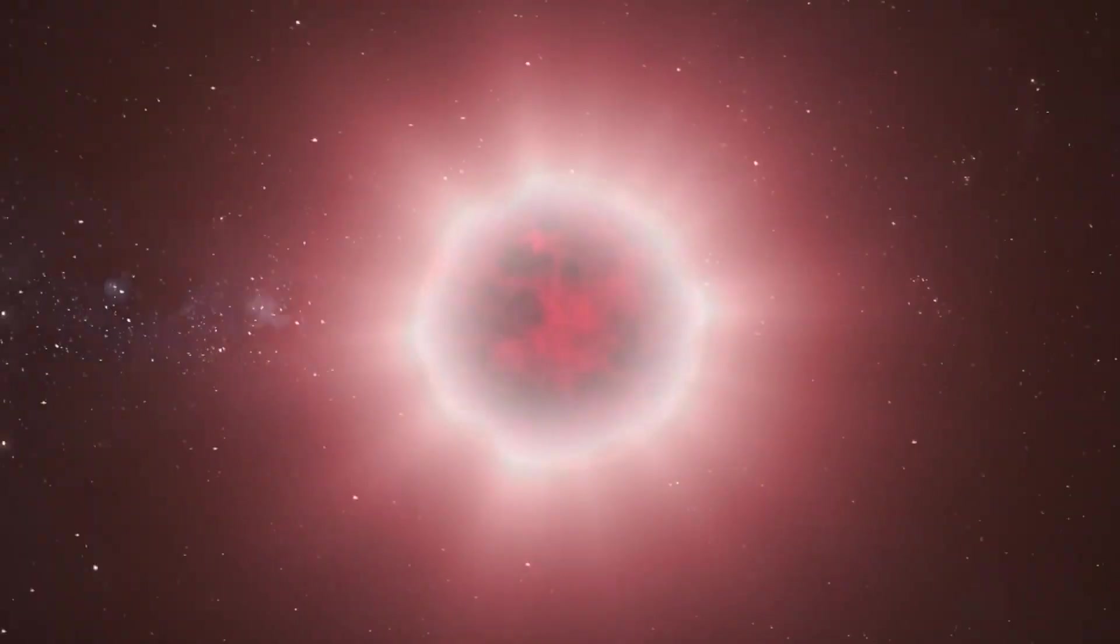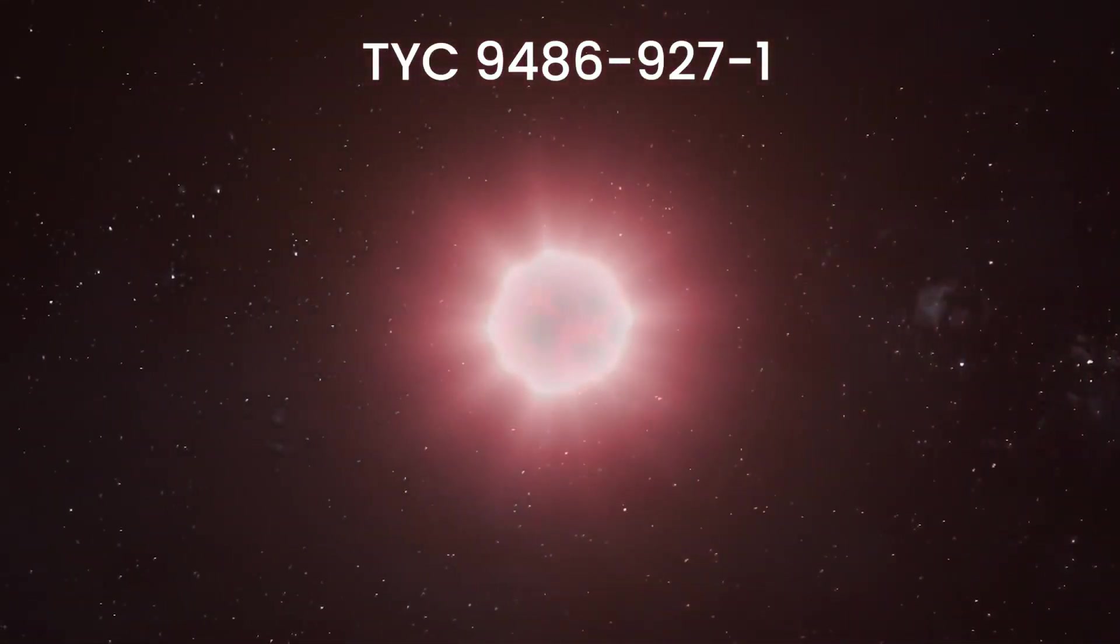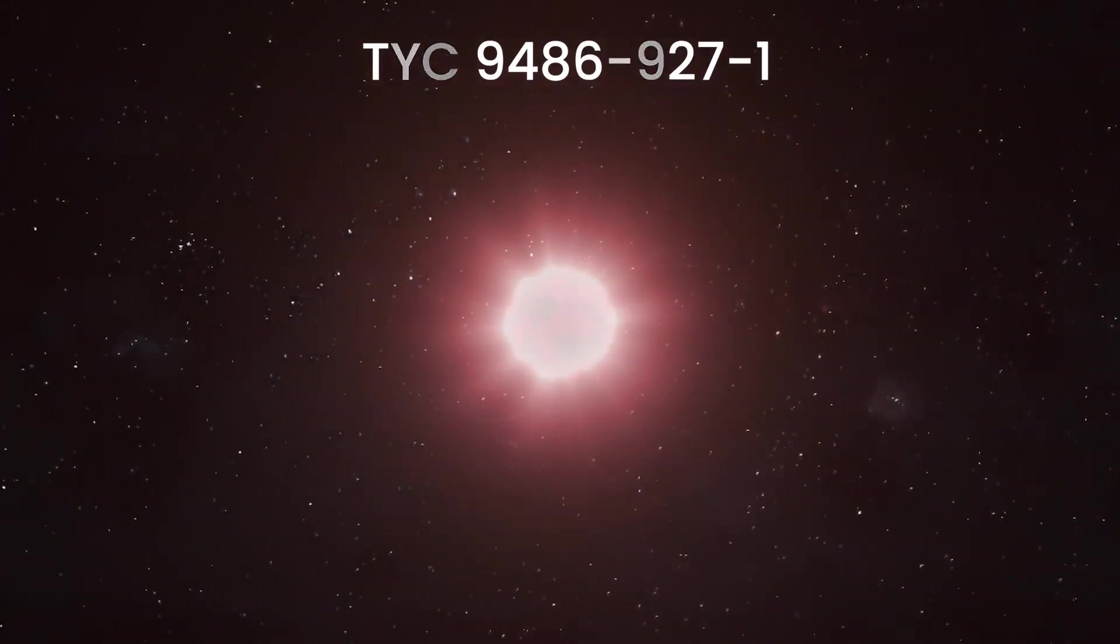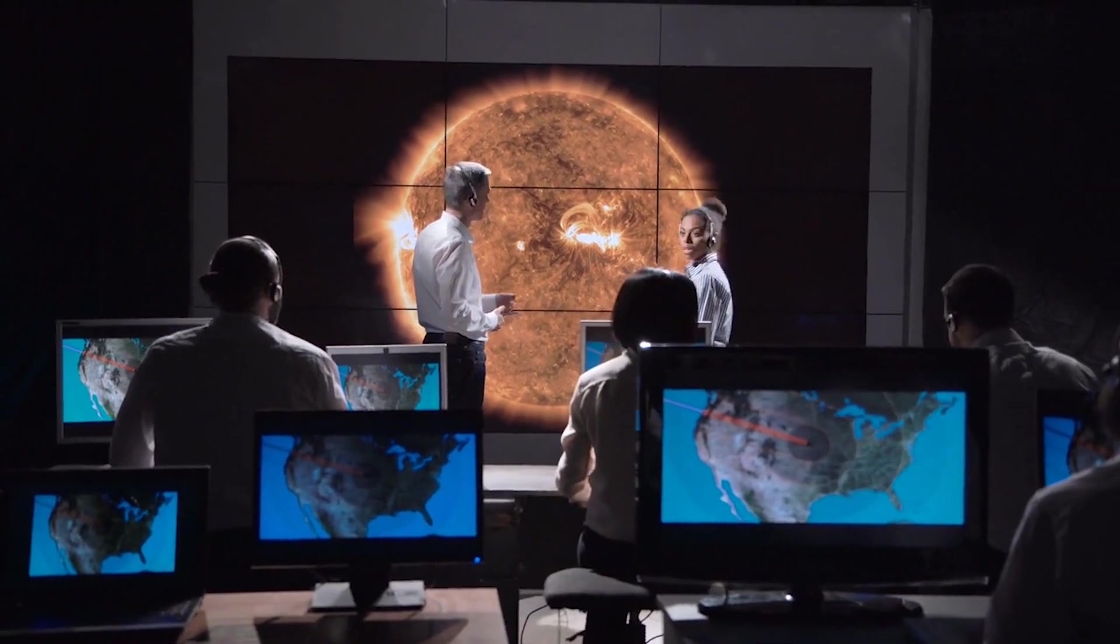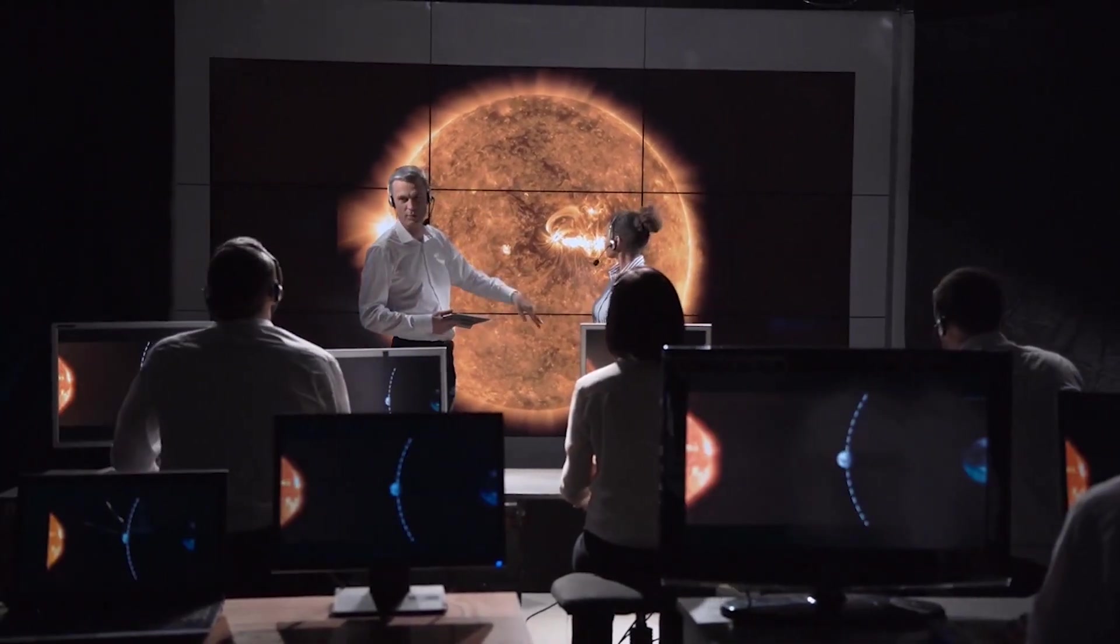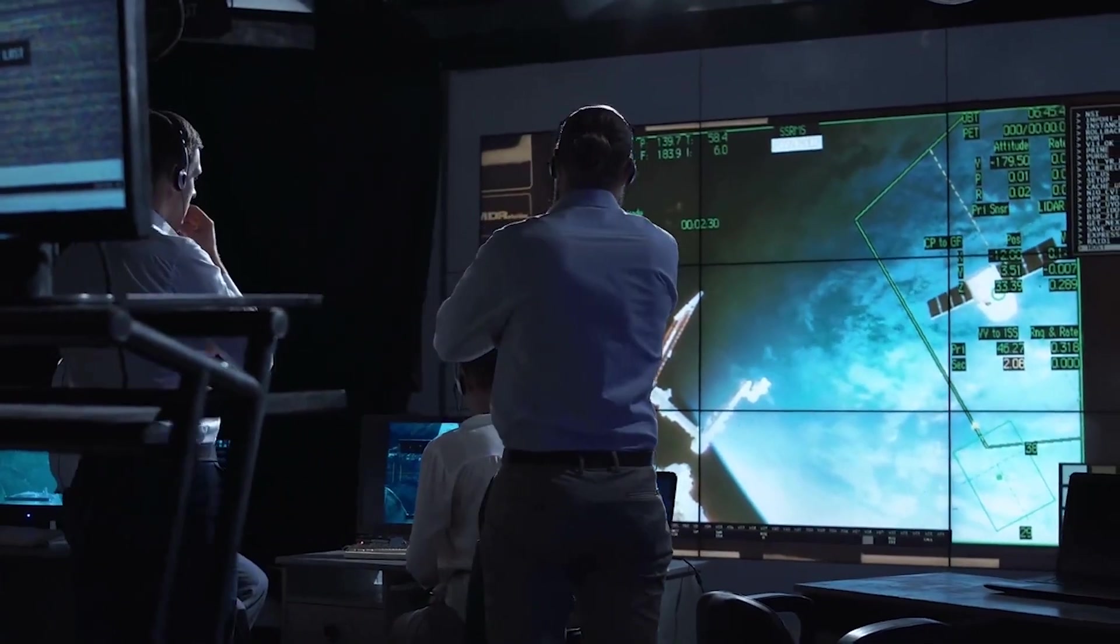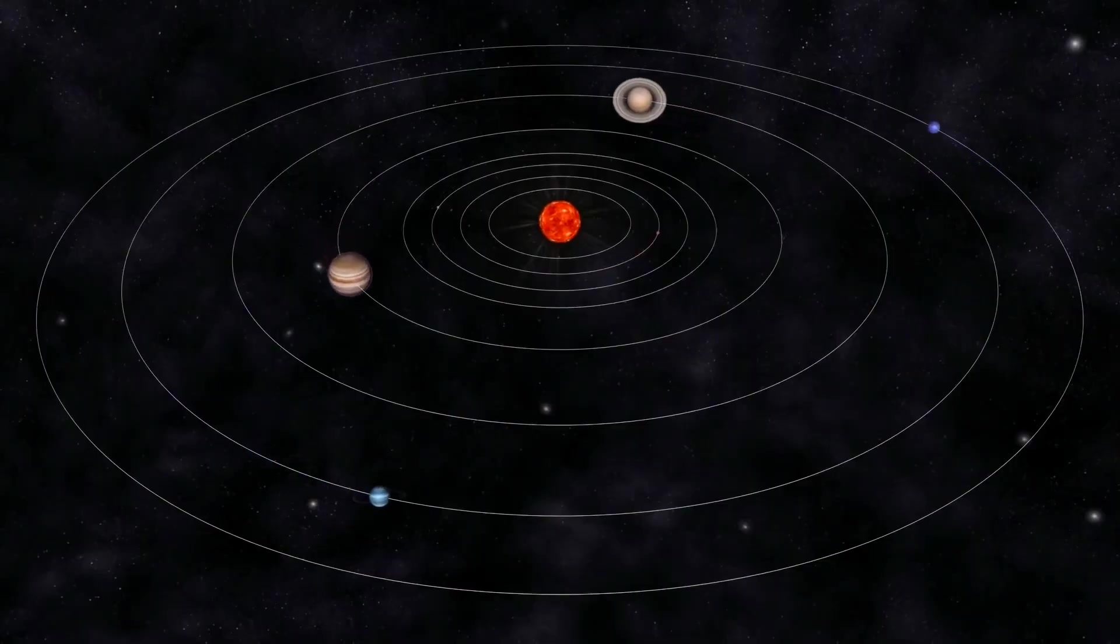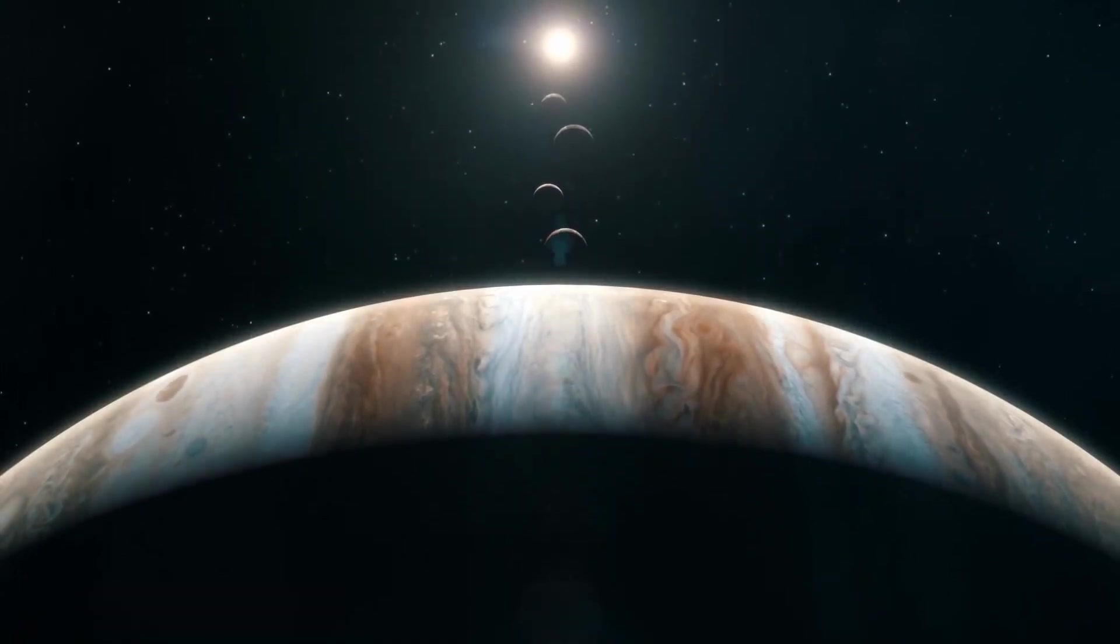It turns out that 2MASS J2126 and TYC9486-927-1 moved through space at the same time. Strangely, astronomers have understood both of these things for a long time, but no one ever saw their connection. But then, researchers discovered that the exoplanet and the star are about 104 light-years from the Sun. This means they are linked.